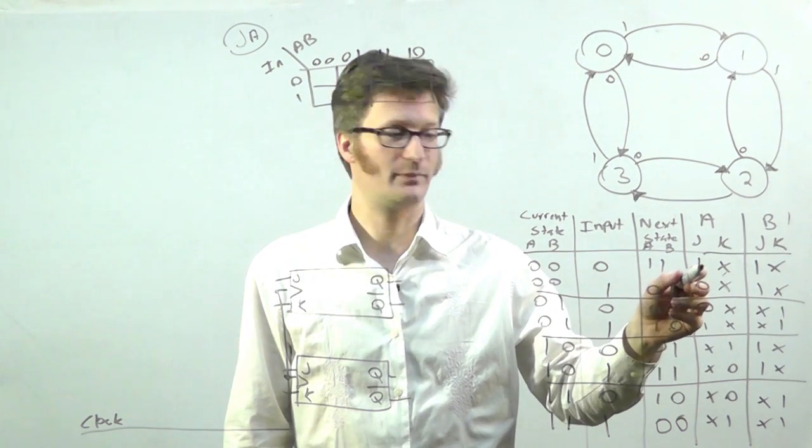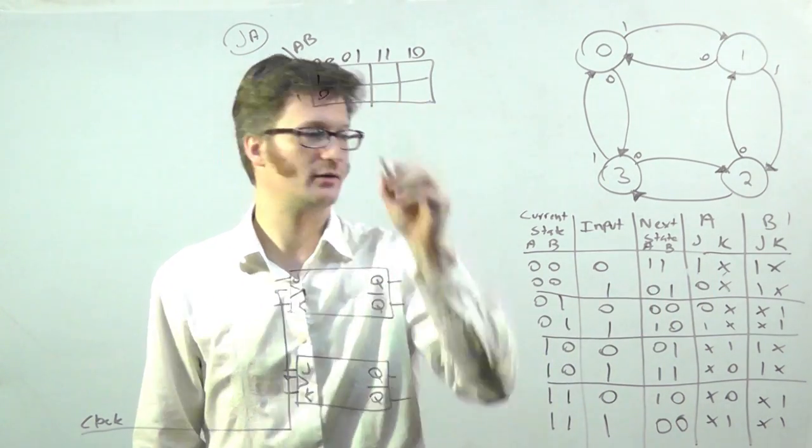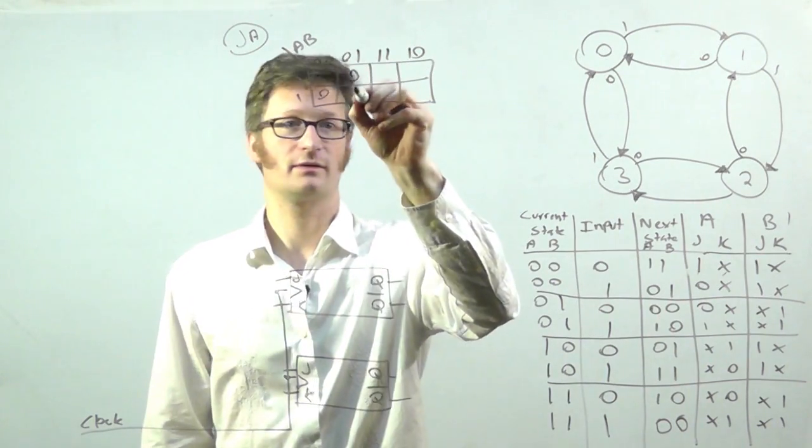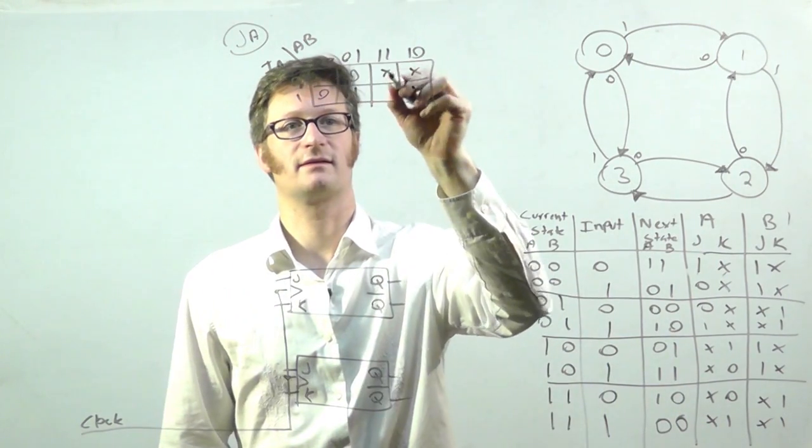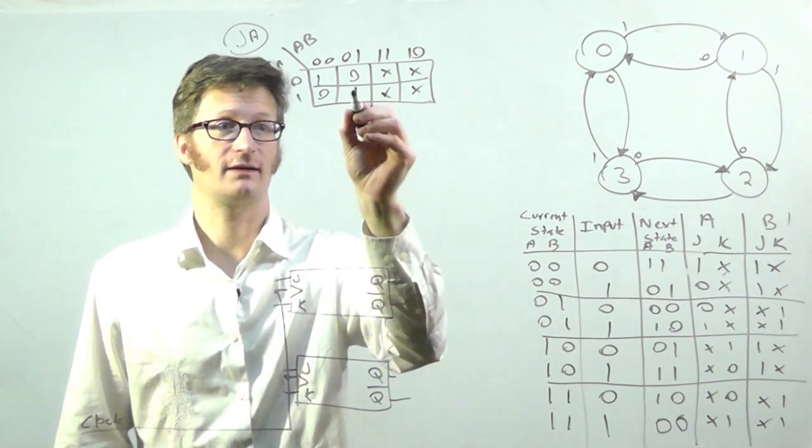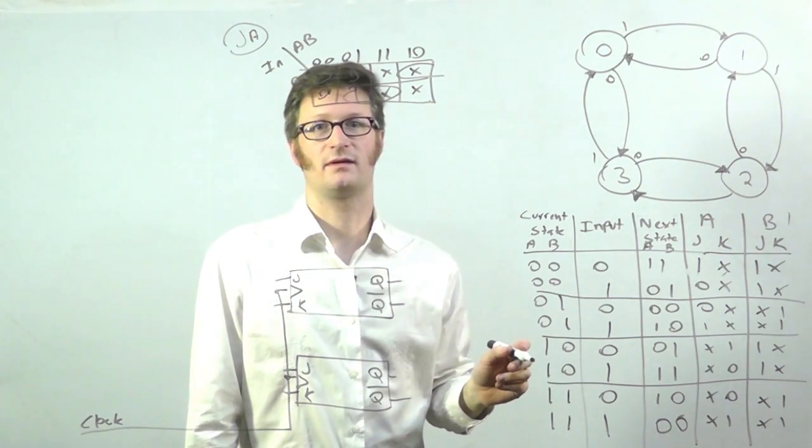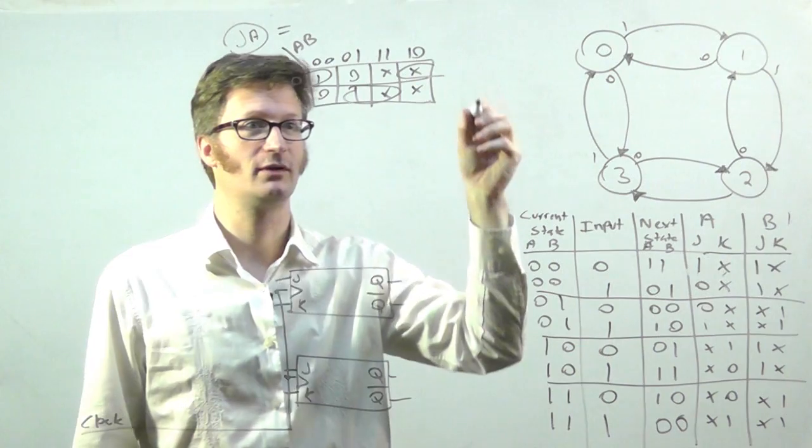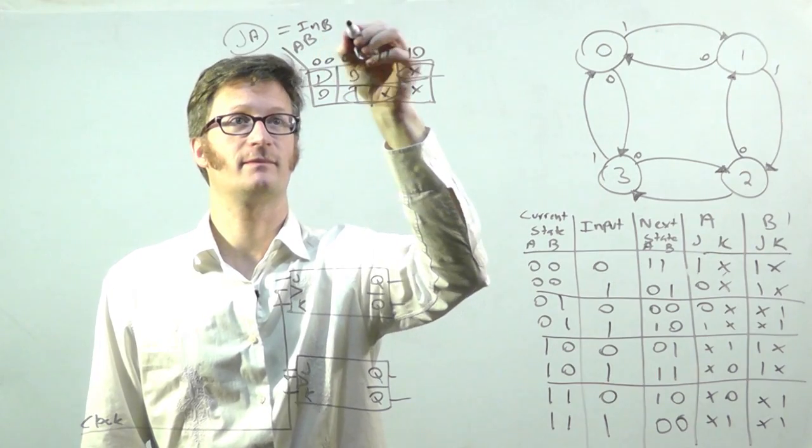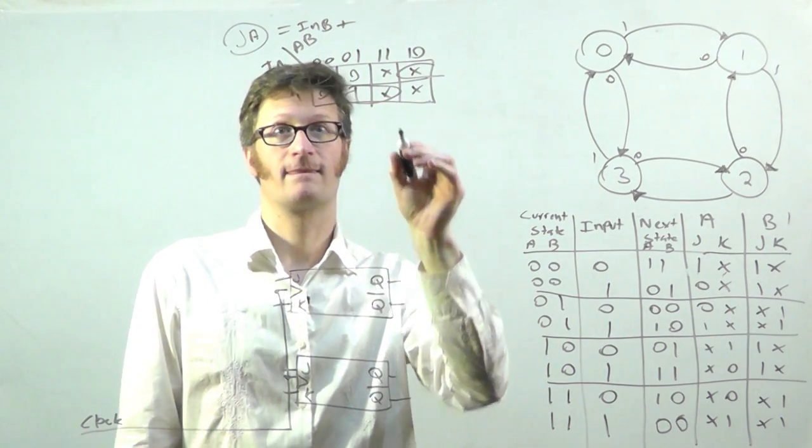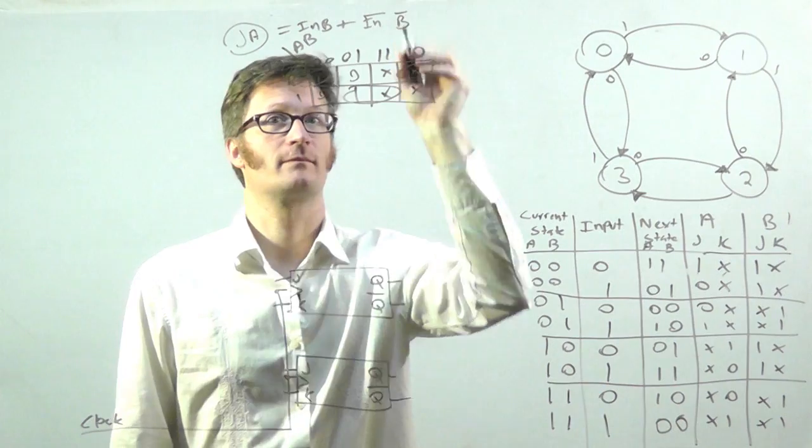If my input is 0, 0, we get 1, 0, and here is 0, 1, and here we have XX, and here we have XX. So, I can simplify this into that, which is equal to in and B, or in bar, B bar.